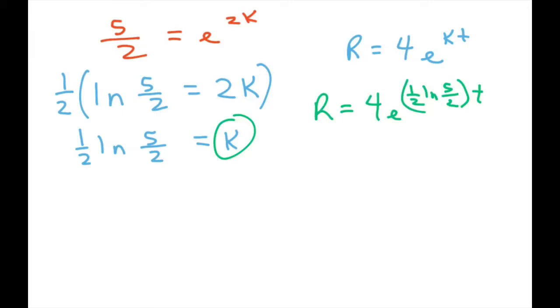We want r when t is 3. We're going to plug in the 3. We want t equal 3 on the original problem, so after 3 seconds. They want to know what the radius will be after 3 seconds. So we write this out: 4 e to the 1 half ln of 5 halves times 3.